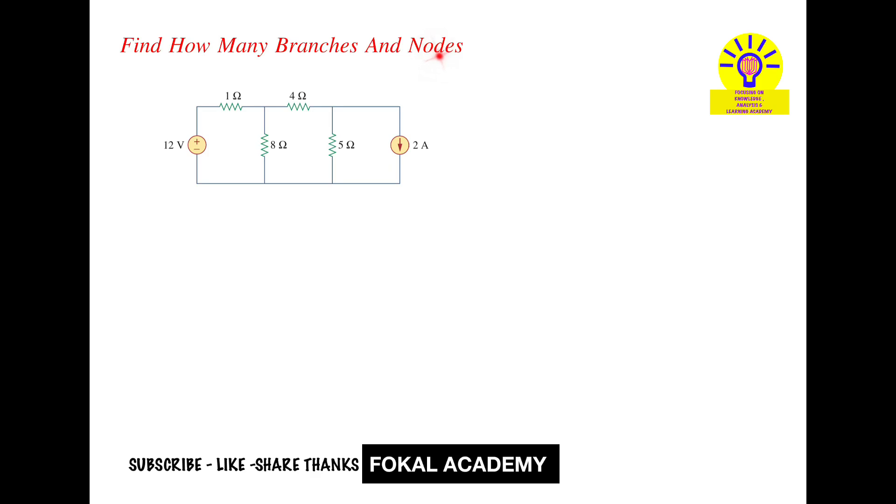What is a node? Node means the point at which current division takes place, that is called a node. If you observe carefully here, this is called a node. At this point, current will be divided. So one node, and here this is the second node, and here this is the third node, and here this is the fourth node. So totally four nodes are there.